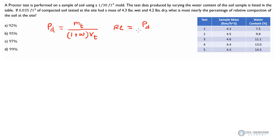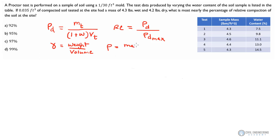We'll call it rho sub d, the dry density, divided by rho sub d max. The difference between rho and gamma when dealing with unit weights or unit masses is just the acceleration of gravity. Gamma is usually a unit of weight per unit of volume, whereas rho is usually listed as a unit of mass per unit of volume. In this problem I'm going to use rho notation versus the gamma notation listed in the FE reference handbook.